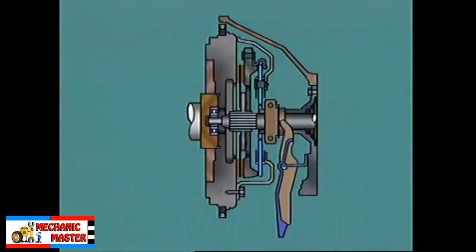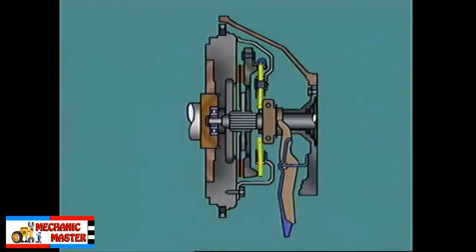When the clutch pedal is depressed, the movement is transferred through the operating mechanism to the operating fork and the release bearing. The release bearing moves forward and pushes the center of the diaphragm spring towards the flywheel. The diaphragm pivots on its fulcrum rings.